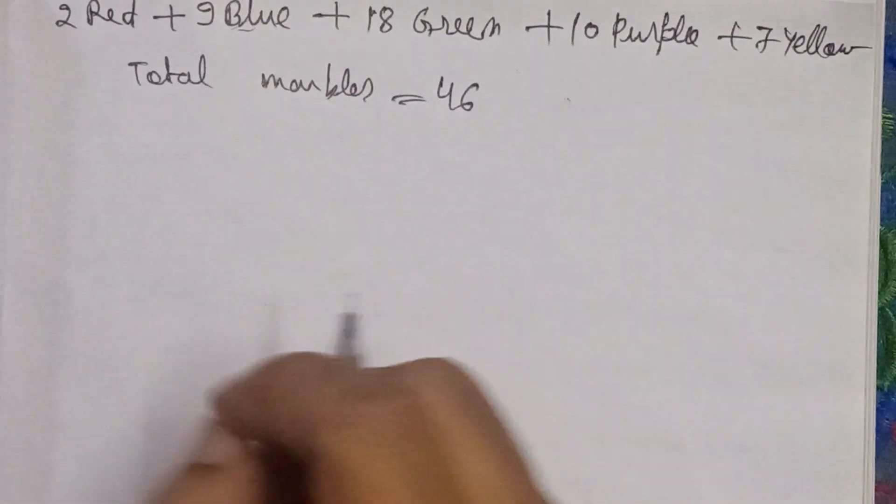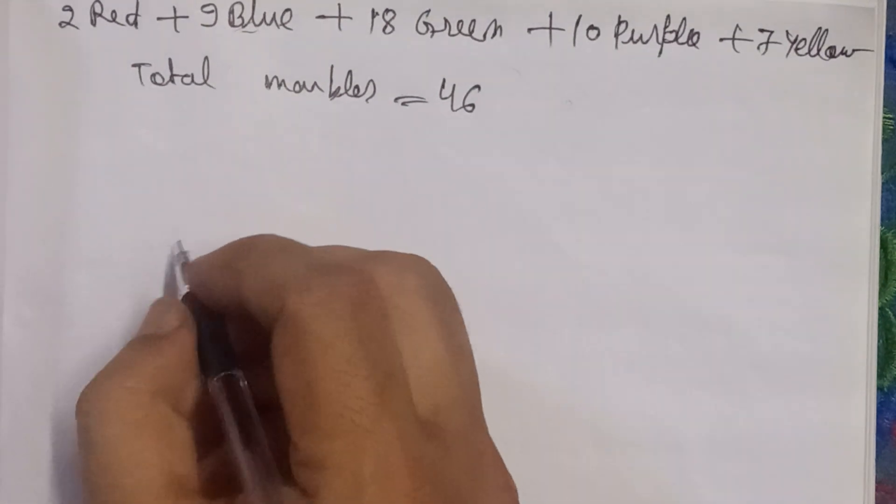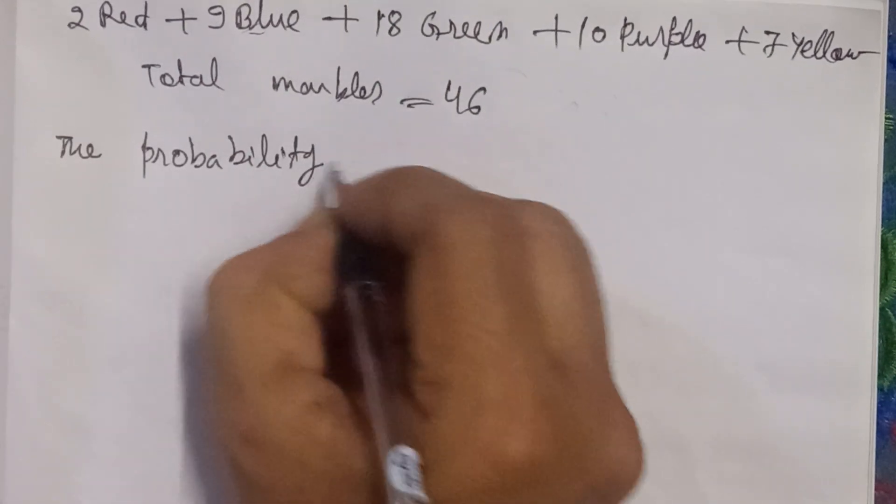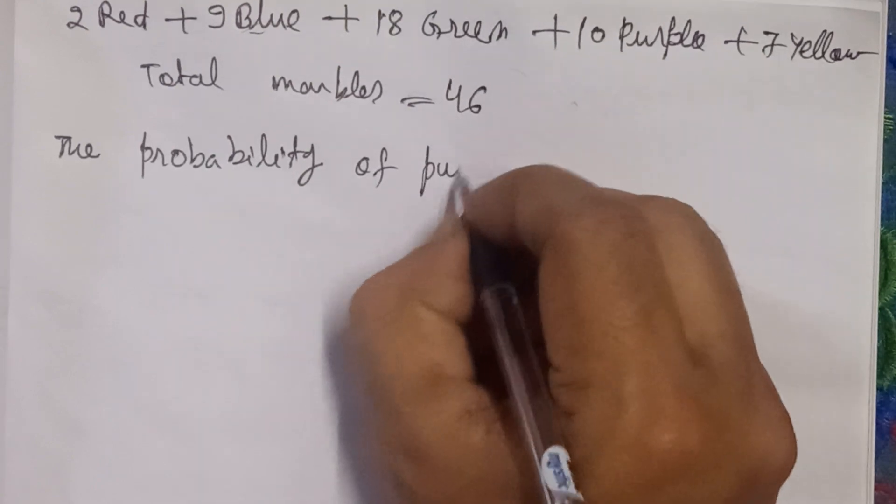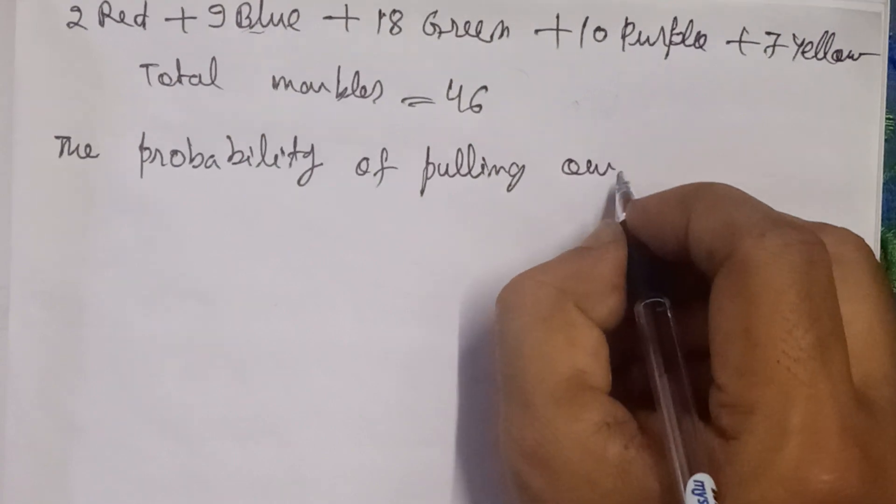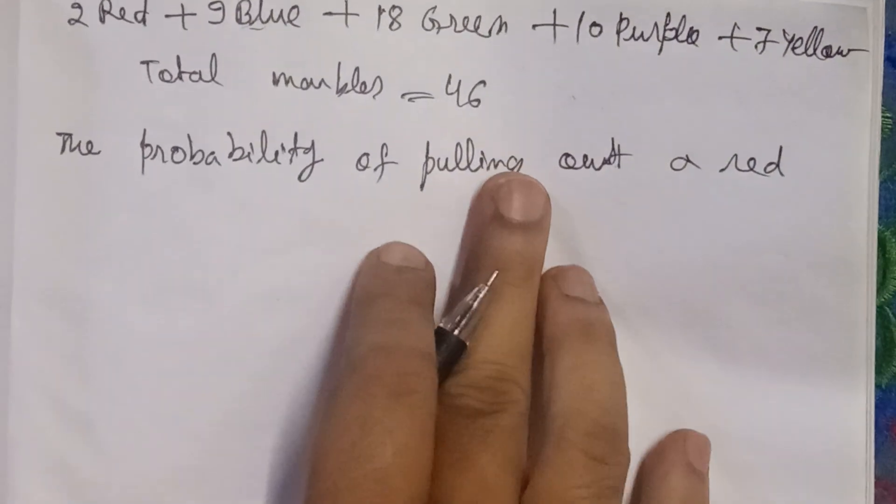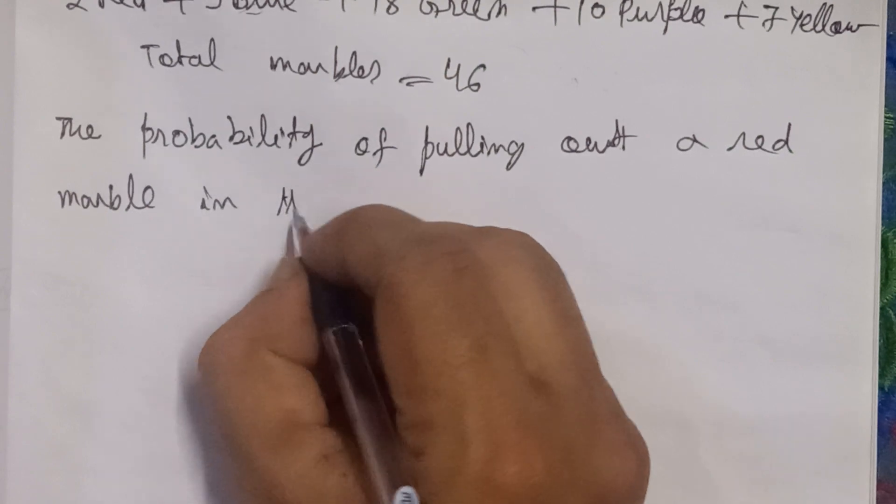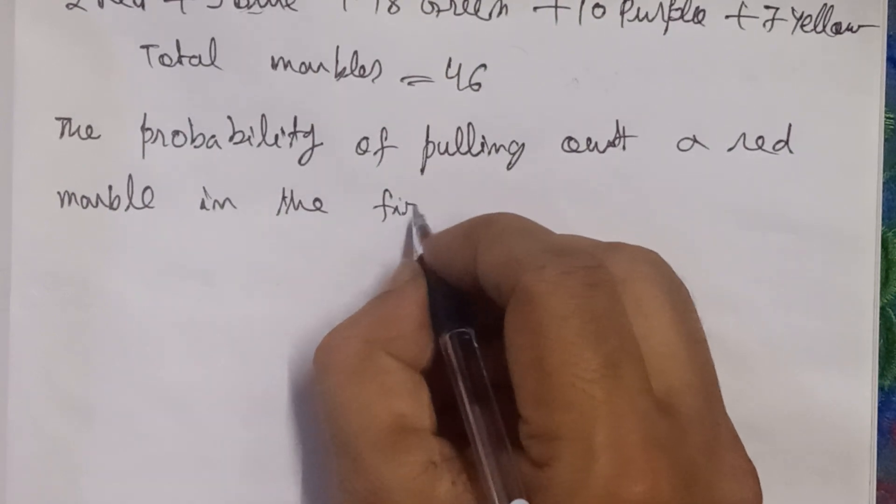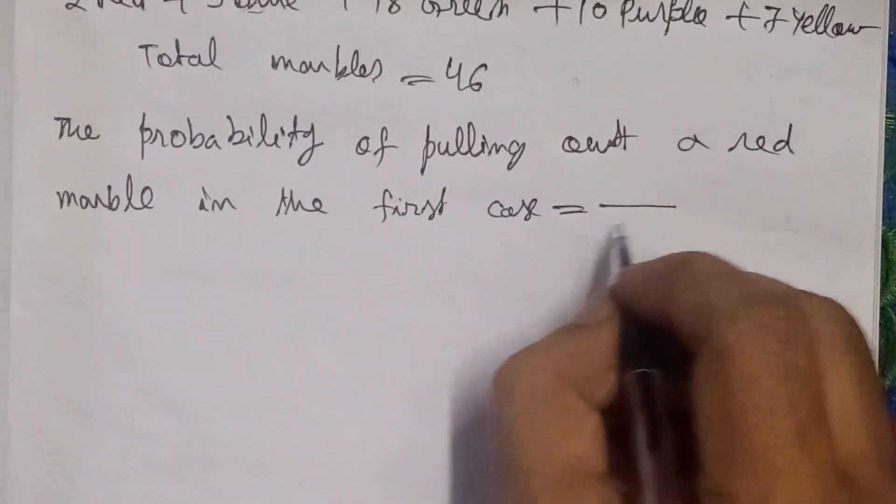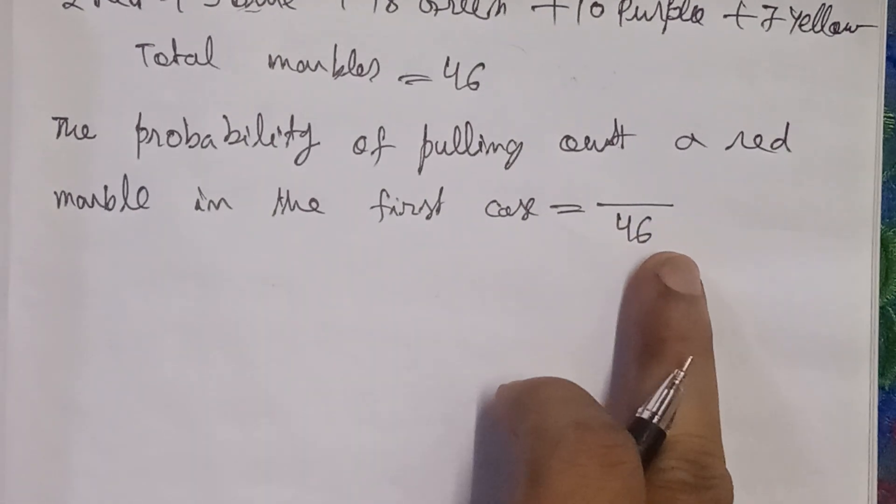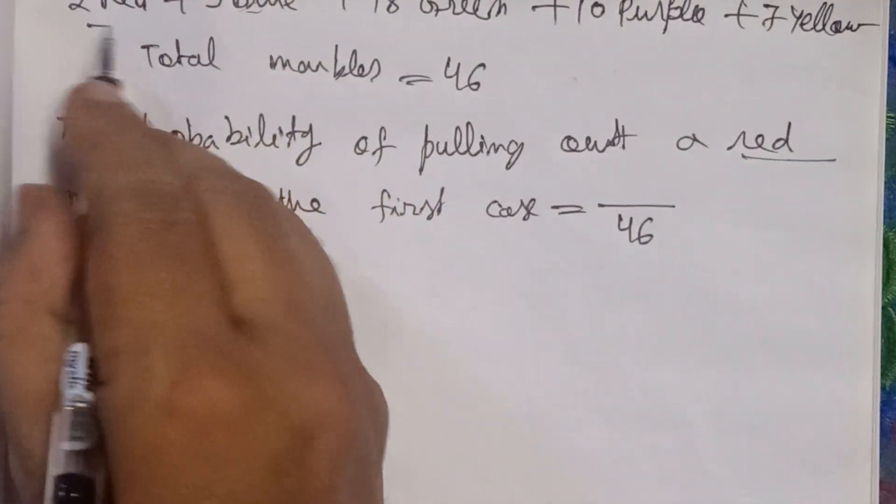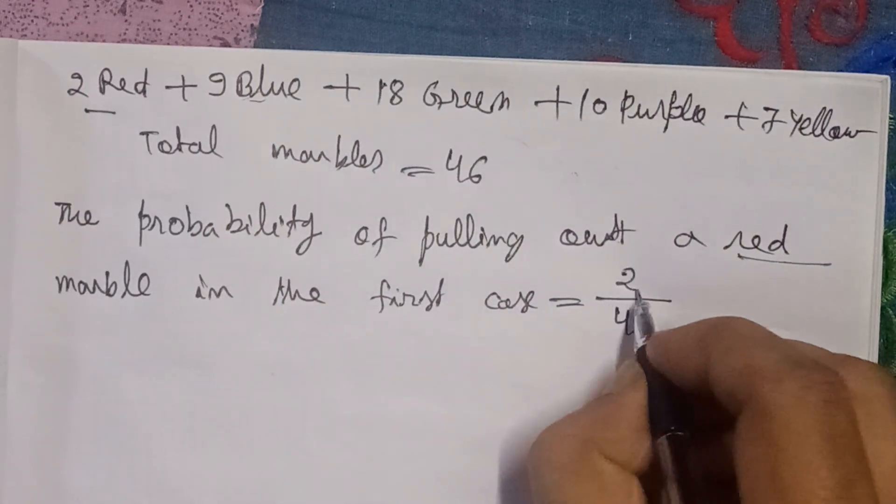The first marble we draw from it, we'll write the probability of it being red. The probability of pulling out a red marble in the first case: total outcomes are 46, and favorable outcomes are red, which is only 2. So the probability is 2/46,